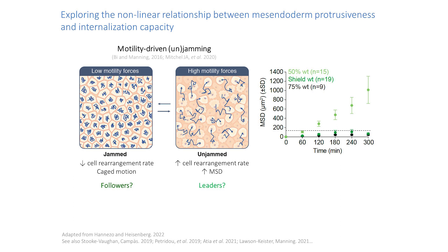What was really interesting was what we found for the follower cells: over the timescale of hours, these cells barely displace within the tissue. The dashed line indicates one cell diameter, meaning over the timescale of hours these cells basically don't move — they stay exactly where they were placed. This is consistent with cage motion and a jammed-like state.